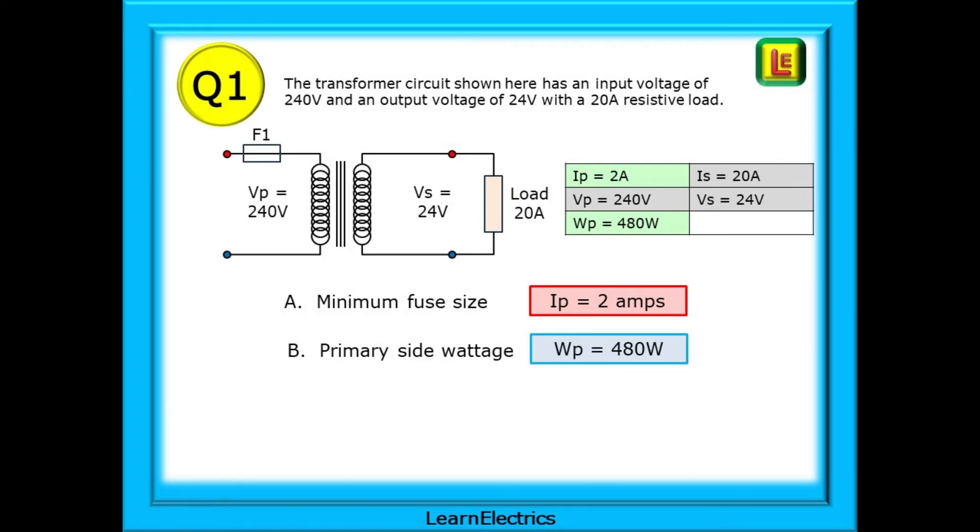Our answers then. Part A, the minimum fuse size is 2 amps and we've found this by calculating IP. And part B, WP is the primary side wattage at 480 watts.